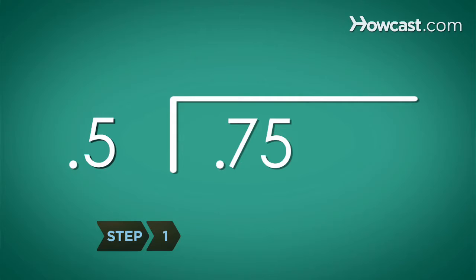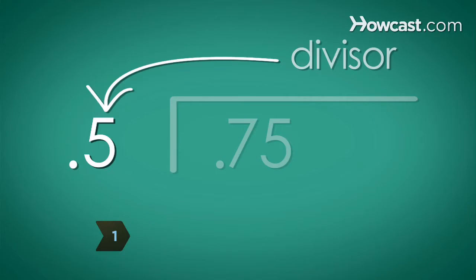Step 1. Change the divisor, the number by which the other number, the dividend, is divided, to a whole number by moving the decimal point to the right.